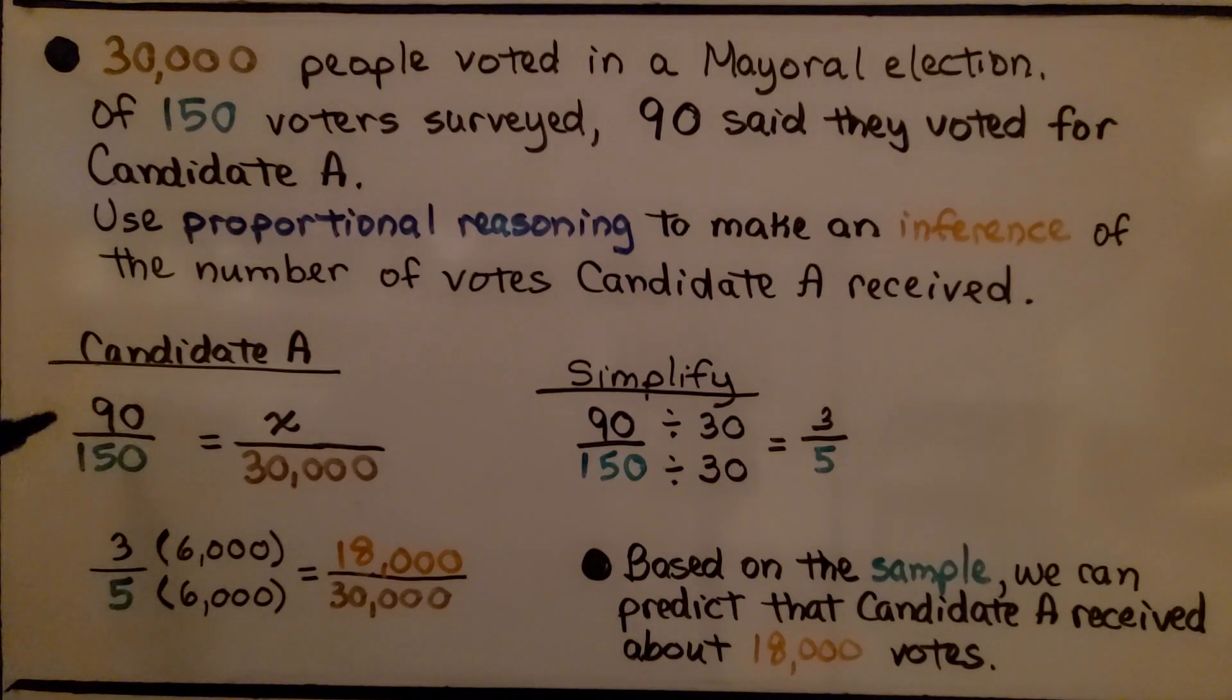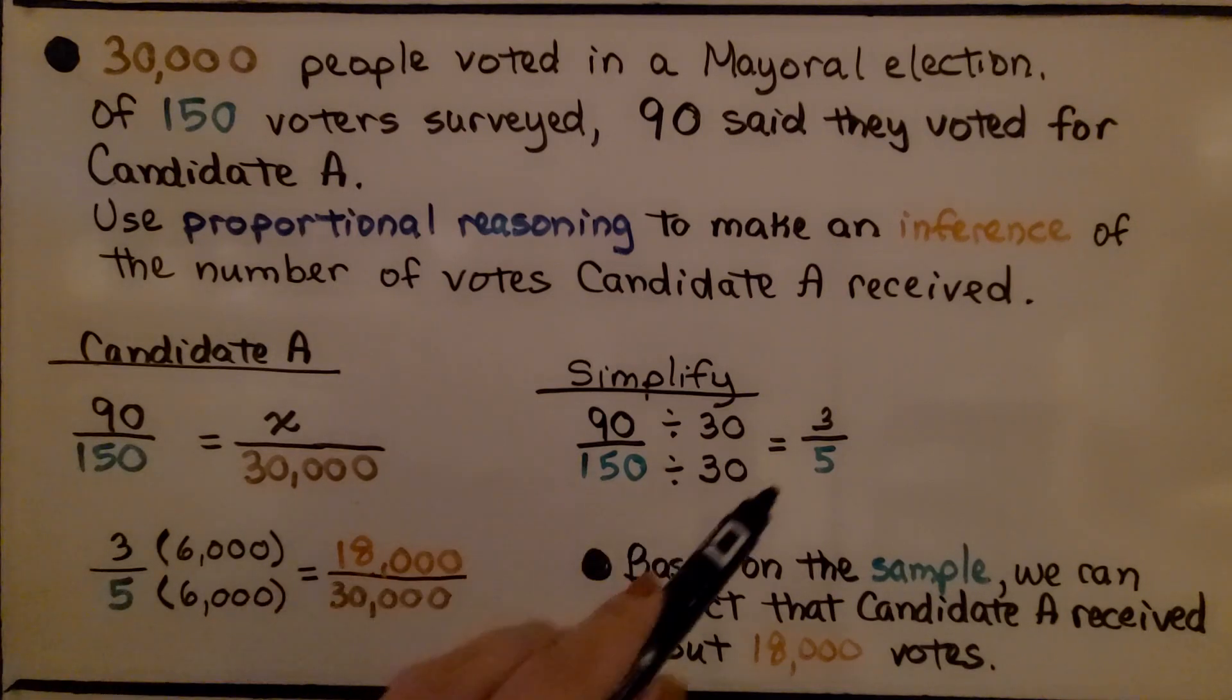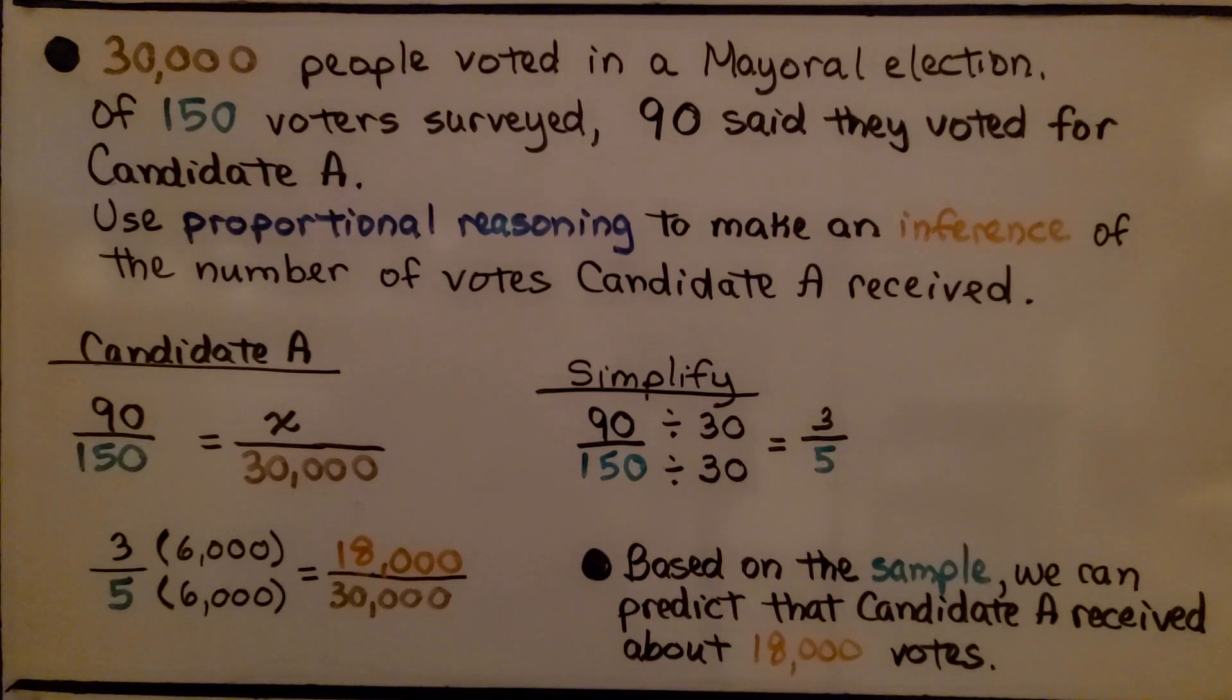If we simplify 90/150, we get 3/5. Three-fifths, this five needs to be multiplied by 6,000 to be 30,000, so we need to multiply the numerator by 6,000. That gives us an inference of 18,000. Based on the sample, we can predict that Candidate A received about 18,000 votes.